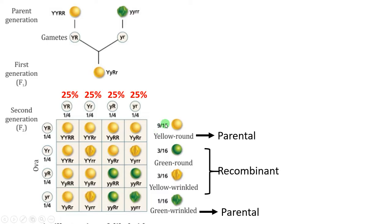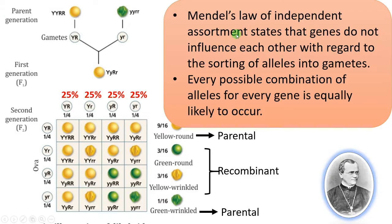He did the dihybrid cross and got 9/16 of the parental types. Then, as expected, green round and yellow wrinkled (the recombinant types) appeared at 3/16 each, and 1/16 was the recessive parental type — green wrinkled. So as predicted, he got the 9:3:3:1 ratio. From this, Mendel proposed the law of independent assortment, which states that genes do not influence each other with regard to the sorting of alleles into gametes. The two traits — seed color and seed shape — are independently assorting, and every possible combination of alleles is equally likely to occur. He obtained all possible combinations of phenotypes.